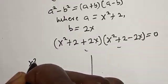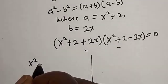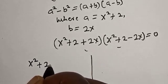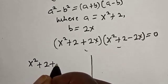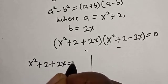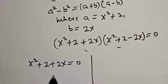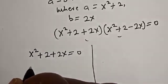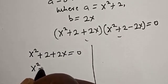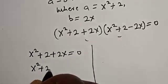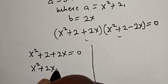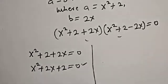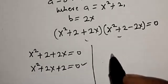The first case is s² + 2 + 2s is equal to 0. If we rearrange, we have s² + 2s + 2 is equal to 0. This is a quadratic equation.